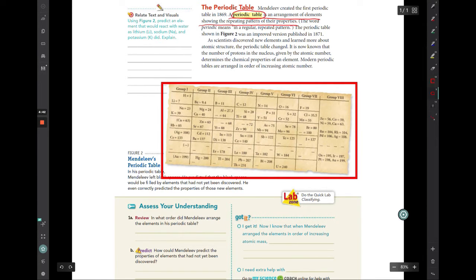He arranged these cards to create the first periodic table, which is an arrangement of elements showing the repeating pattern of their properties. Periodic literally means in a regular repeating pattern. So this is what the first periodic table looked like. Now going back to the example we just talked about, you will see that here is sodium, here is potassium, and here is lithium.